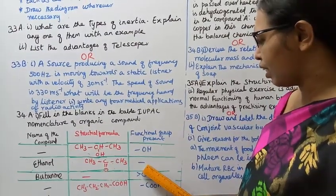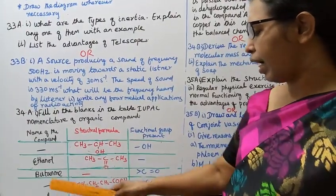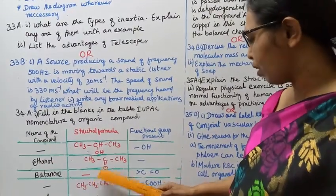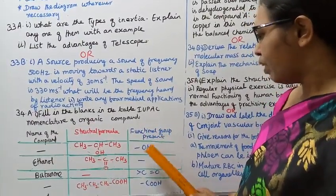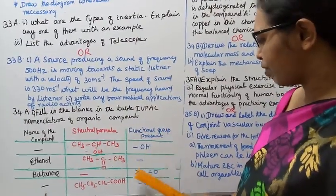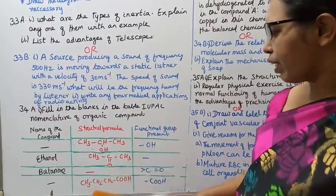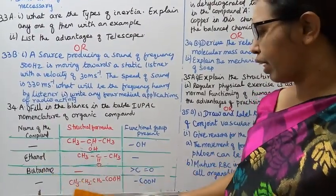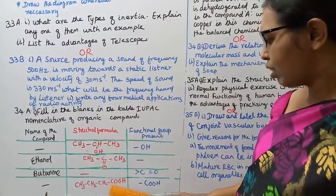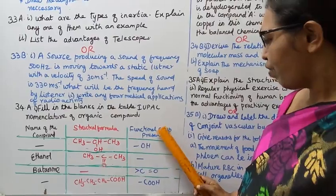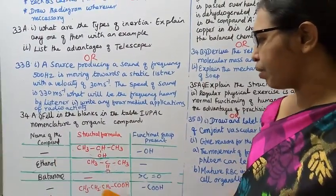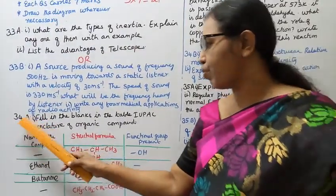Functional group and structural formula entries to fill: one compound has structural formula CH3–C with double bond O. Functional group can be filled accordingly. Another entry: functional group present is greater than C equal to O. Fourth row: name of the compound to be filled. Structural formula: CH3–NH2–CH2–COOH. Functional group present: COOH. That completes question 34A first subdivision.